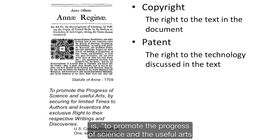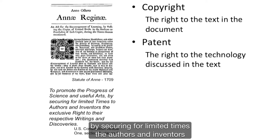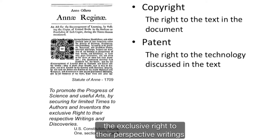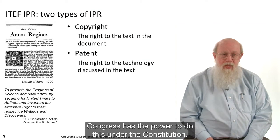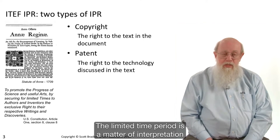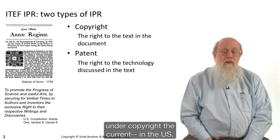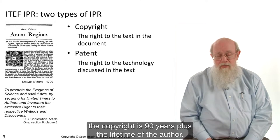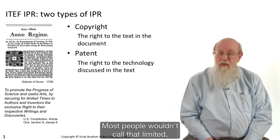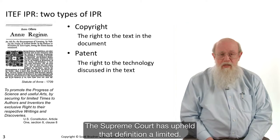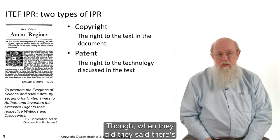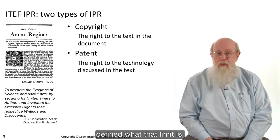The quote of the U.S. Constitution is: to promote the progress of science and the useful arts by securing for limited times to the authors and inventors the exclusive right to their respective writings and discoveries. Congress has the power to do this under the Constitution. The limited time period is a matter of interpretation. Under copyright, the current U.S. copyright is 90 years plus the lifetime of the author. Most people wouldn't call that limited, but Congress has called that limited, and that's the way it sticks. The Supreme Court has upheld that definition of limited, though when they did they said there's probably a limit to limited, but they haven't defined what that limit is.